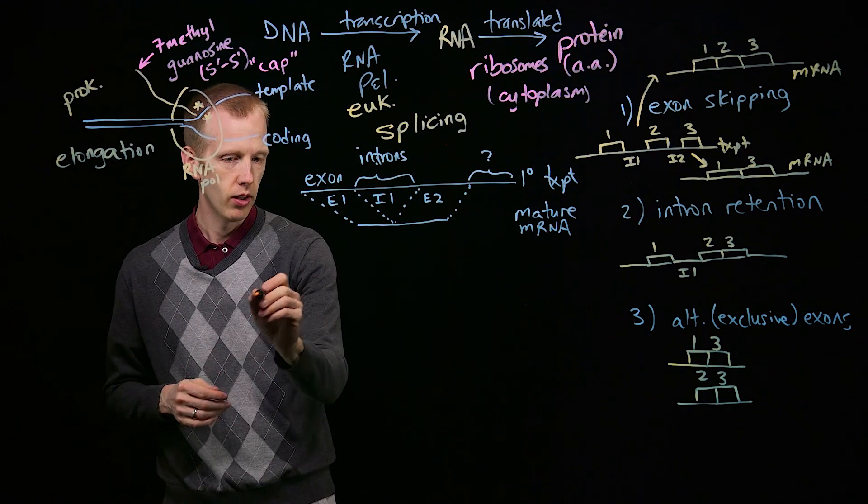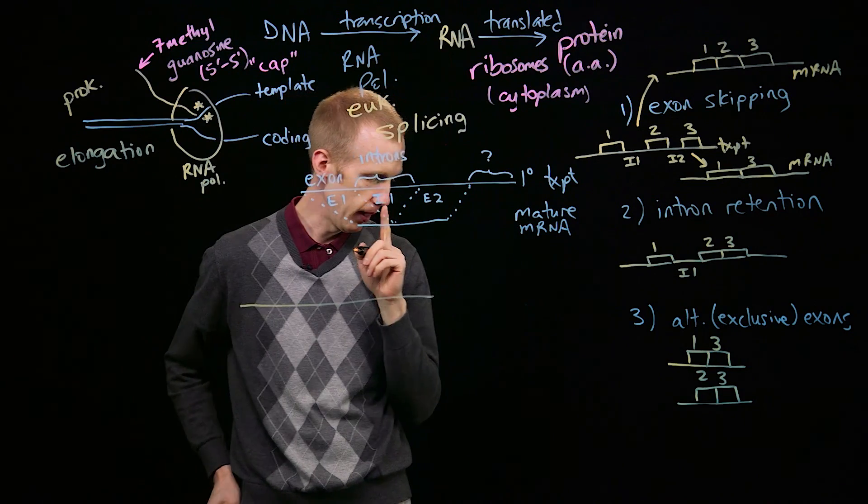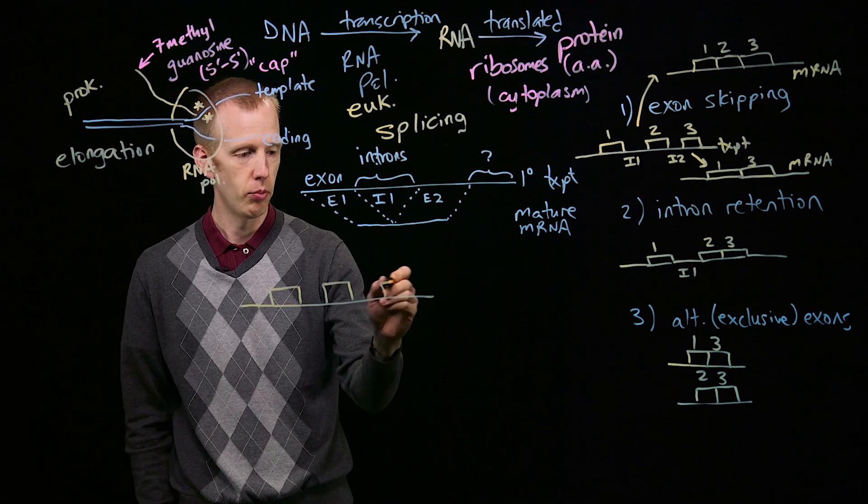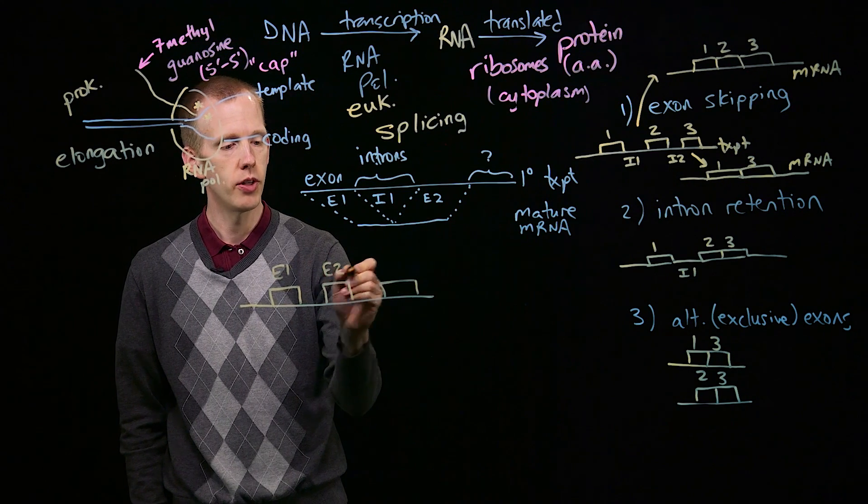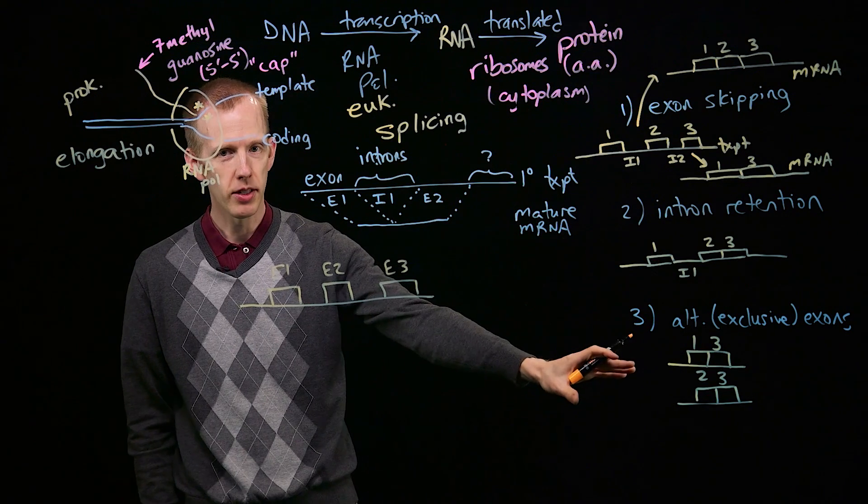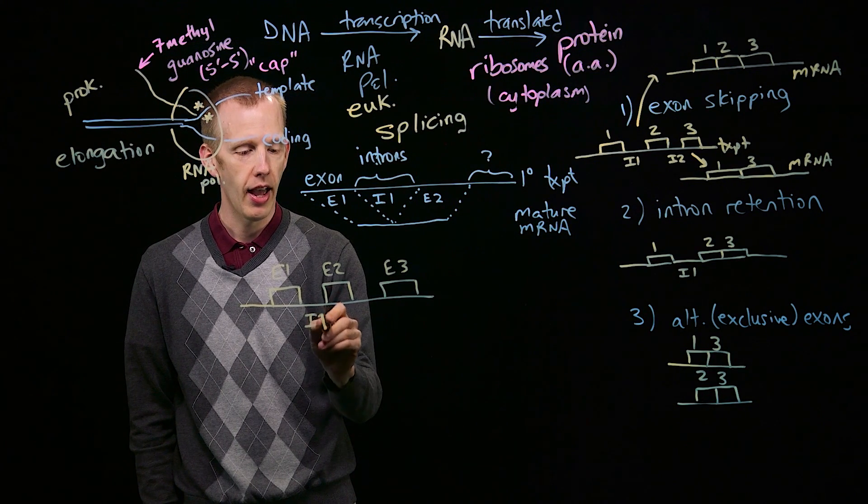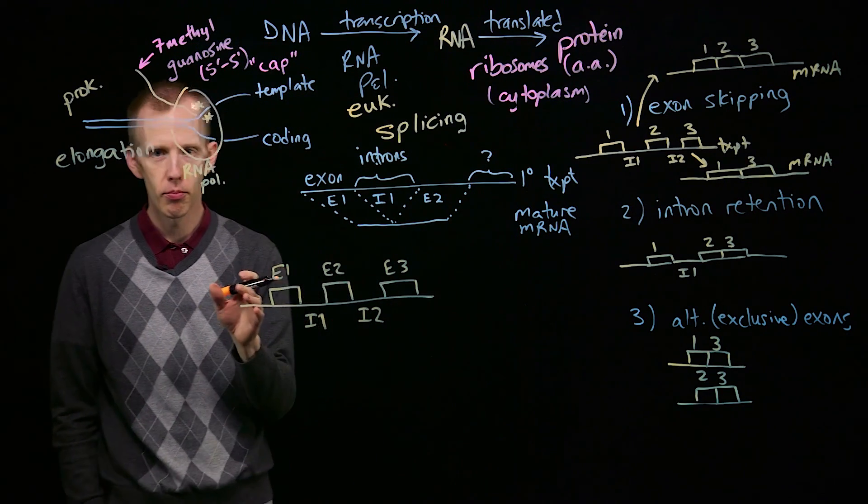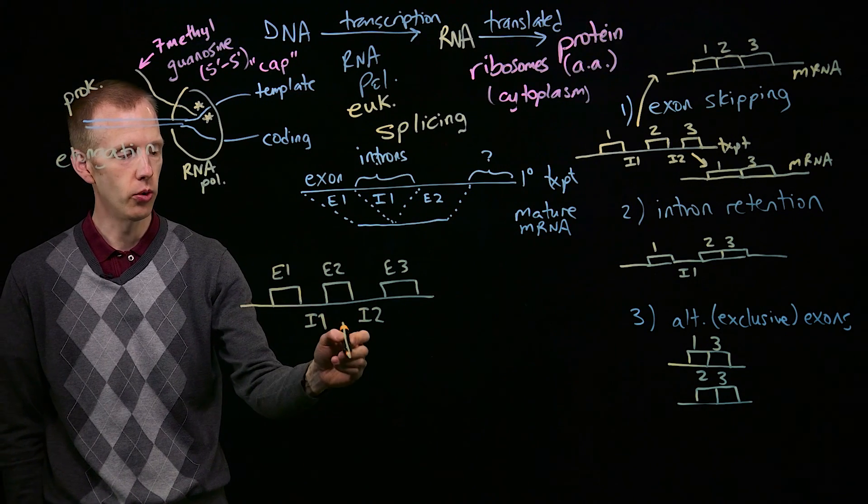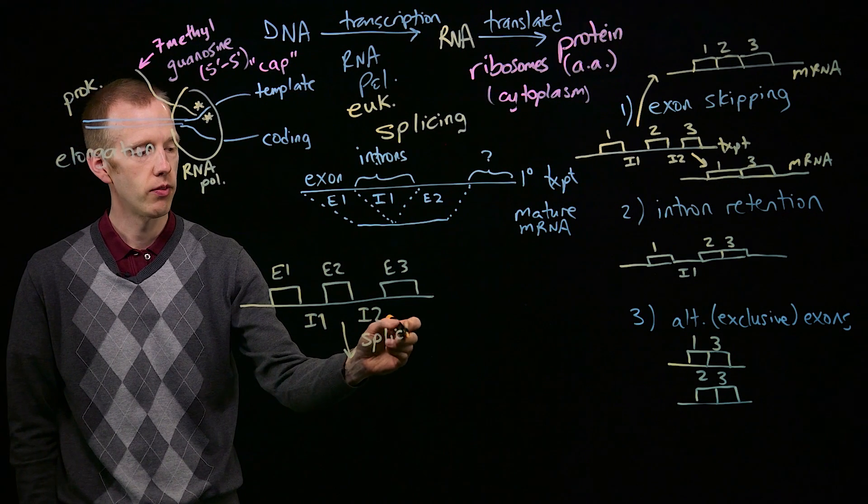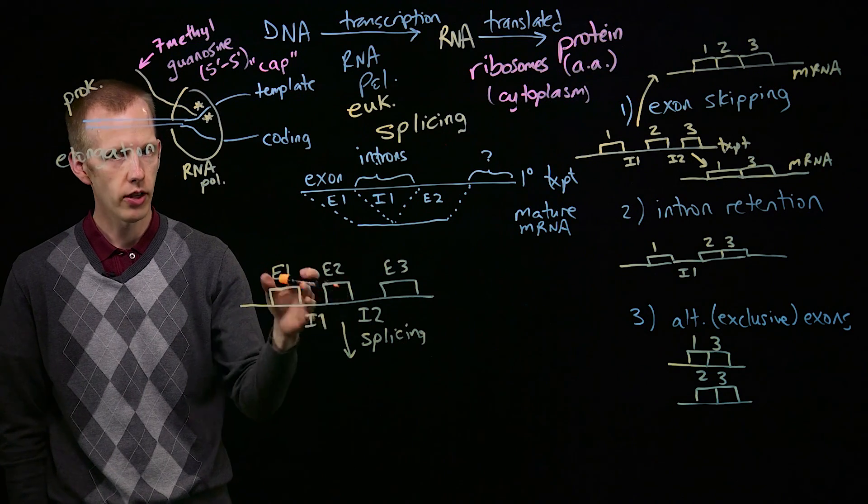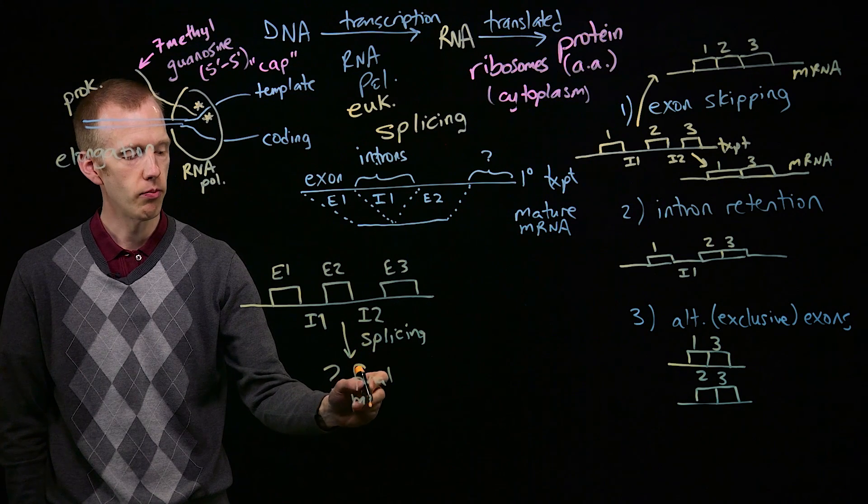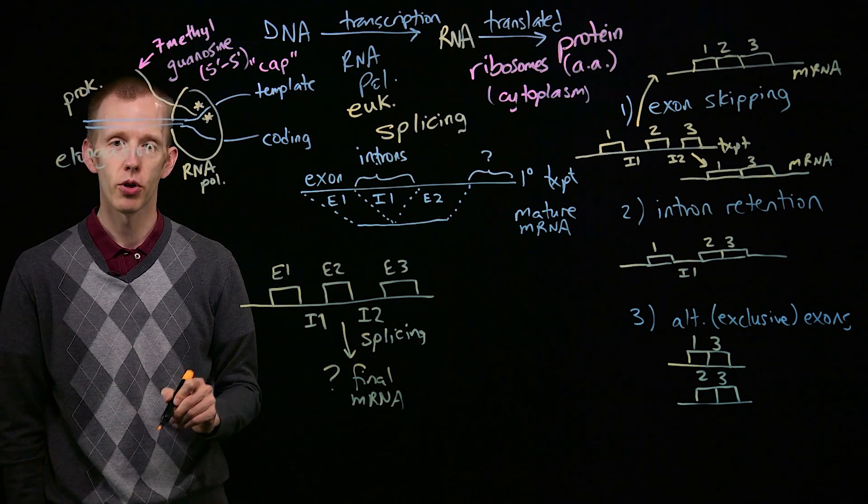Now lastly, for class next time, I'd like you to think about this. If there is a primary transcript before splicing that has 3 exons and 2 introns, given the types of splicing patterns that we can have, how many different processed transcripts, messenger RNA molecules, can be produced from this simple transcript, 3 exons, 2 introns, after splicing? How many mature messenger RNA molecules could be produced?